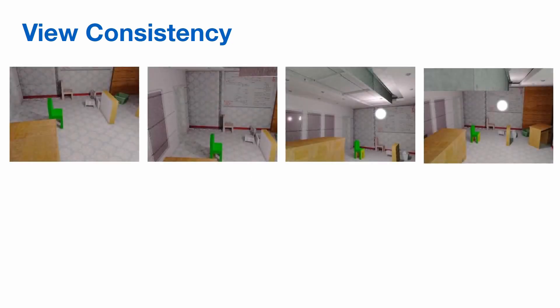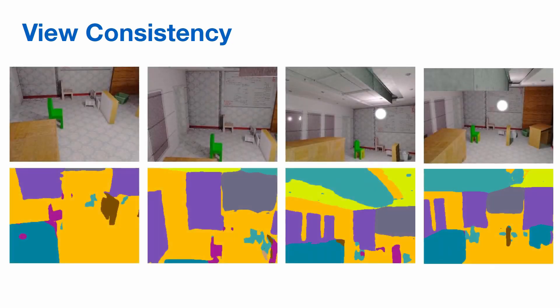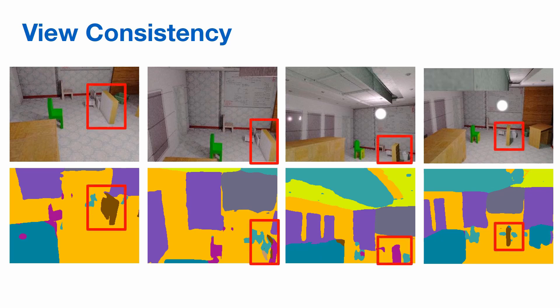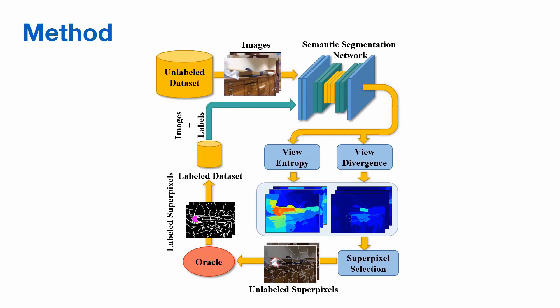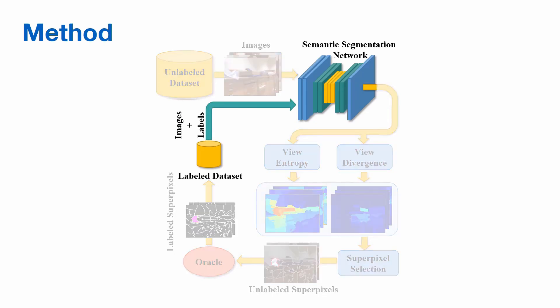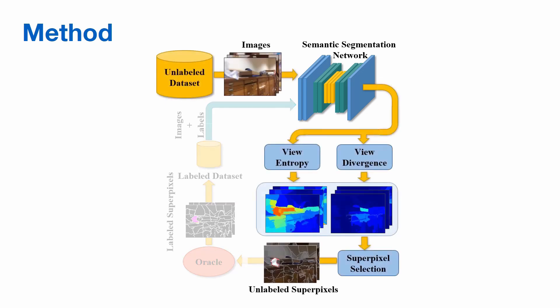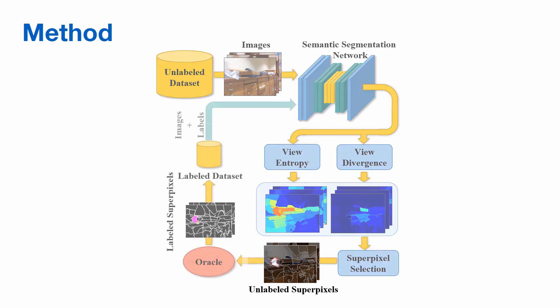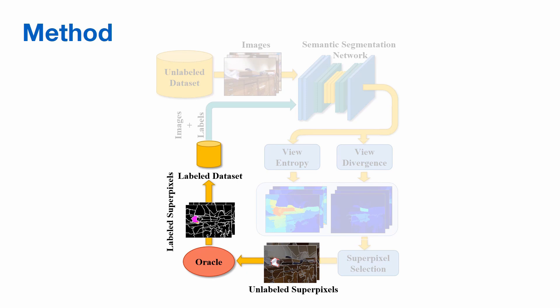We propose a novel active learning method for semantic segmentation that exploits inconsistencies in model predictions across views as a measure of model uncertainty. The major steps involve firstly training a segmentation model on an existing labeled dataset. Next, based on the current model state, we decide which unlabeled samples will be labeled next based on model uncertainty. Finally, we acquire labels for the selected samples and add them to the labeled dataset.